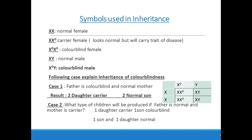Now the symbols used in the Punnett square for sex-linked traits: XX represents a normal female; XX⁰ represents a carrier female who looks normal but carries the gene for the disease — the disease will not appear in her. X⁰X⁰ represents a color-blind female when both X chromosomes are defective. XY represents a normal male, and X⁰Y represents a color-blind male — because the male has only one X chromosome, if it is defective the male will be color-blind.